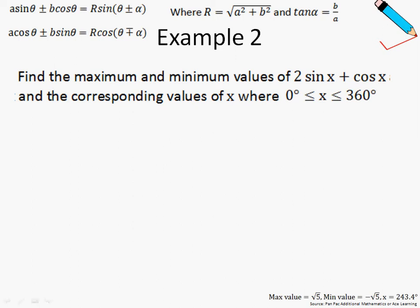So in example 2, we're asked to find the maximum and minimum values of 2 sine x plus cosine x and the corresponding values of x, whereby the range of x is given to be between 0 degrees and 360 degrees. The first thing I'm going to do is to realize that this is in the form of the R formula that is highlighted in yellow over here. So let us first write out the function and identify our parameters. So we have 2 sine x plus cosine x.